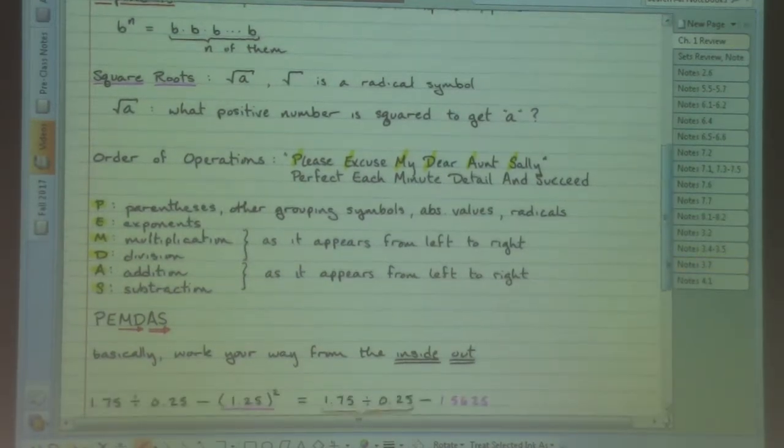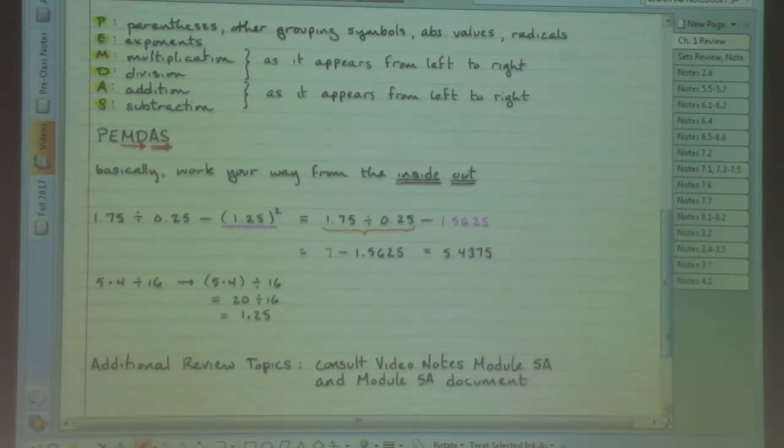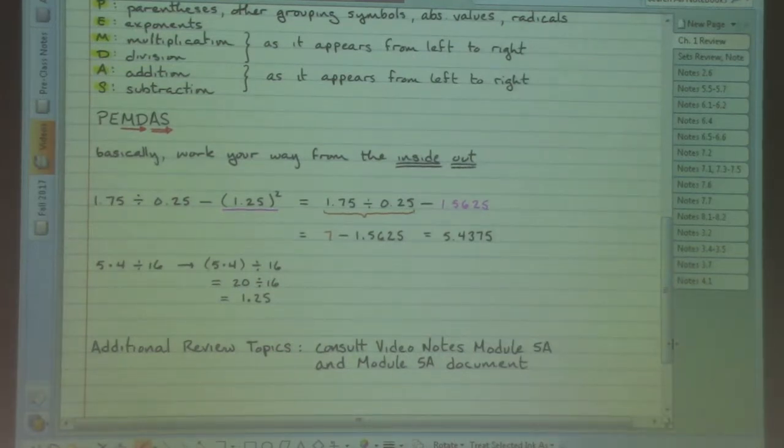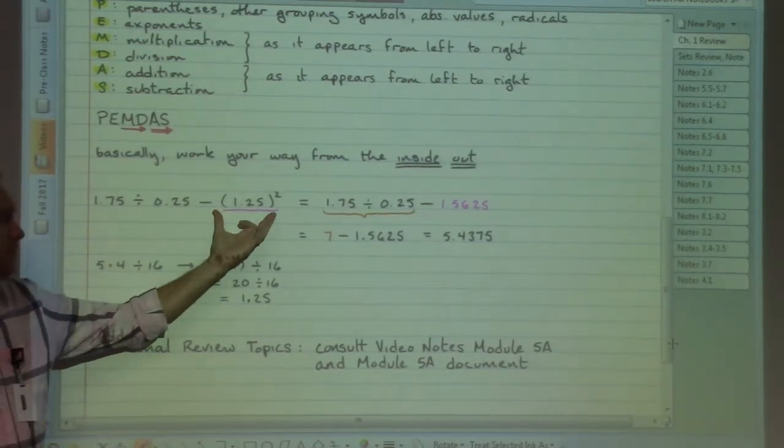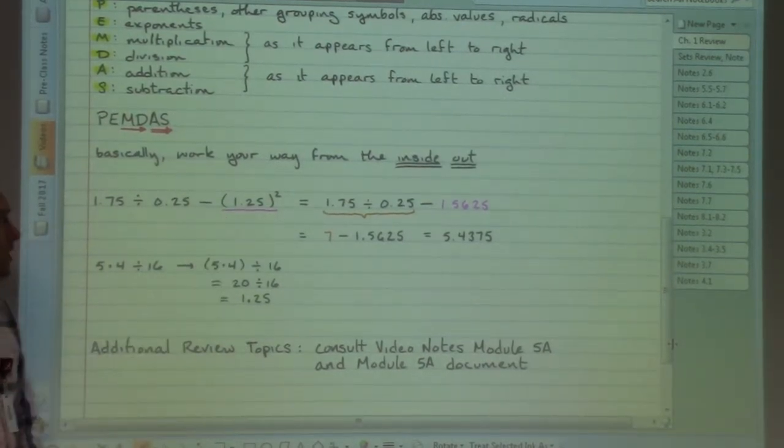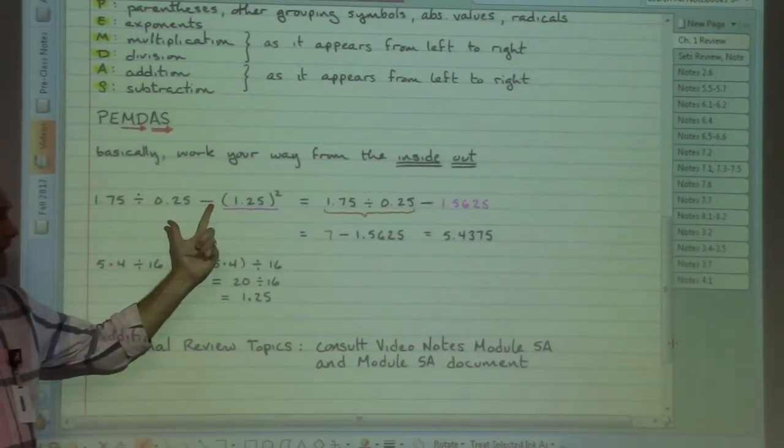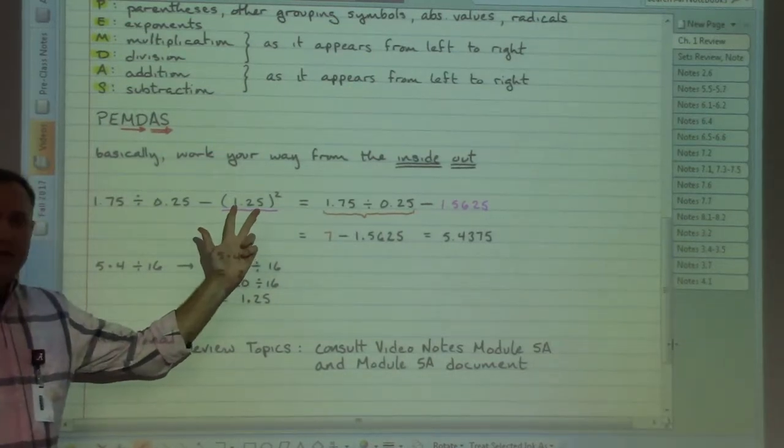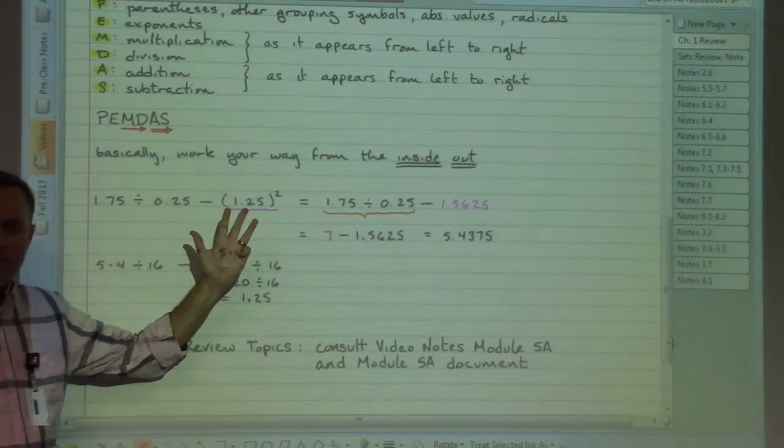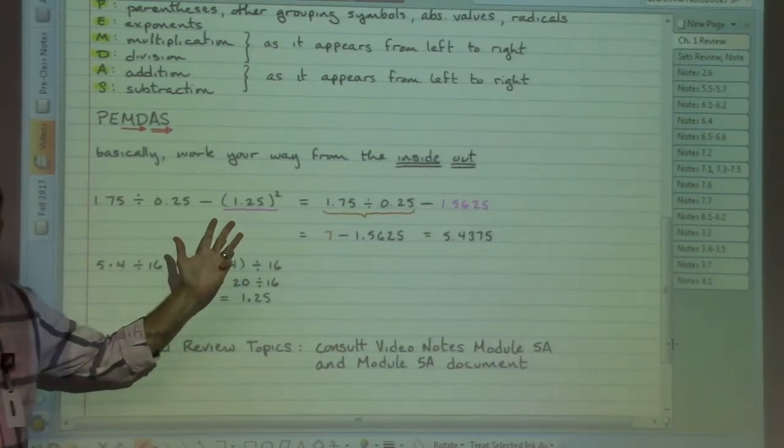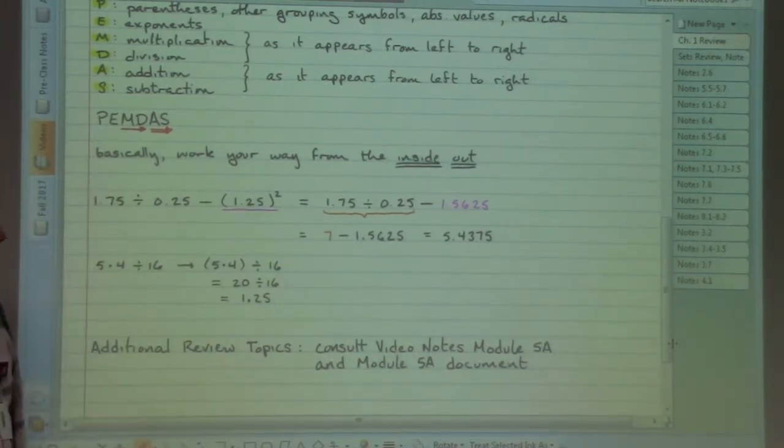So a quick couple of examples here to illustrate some of these ideas. In this first example, 1.75 divided by 0.25 minus parentheses 1.25 squared. According to our order of operations, we have division, we have subtraction, we have the parentheses, and we have that squared showing up. So we have four things that we would have to worry about here in the order of operations, informing us as to which of those four things we need to work first.